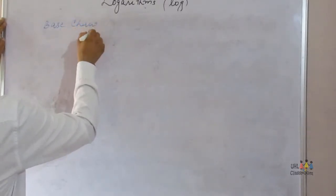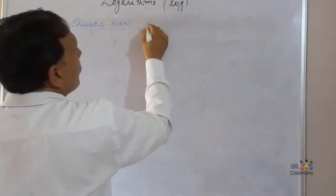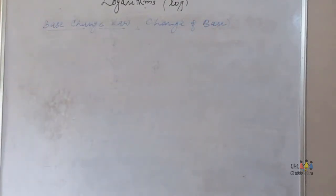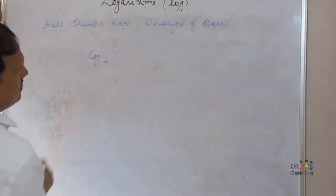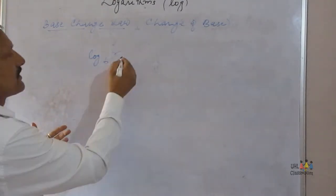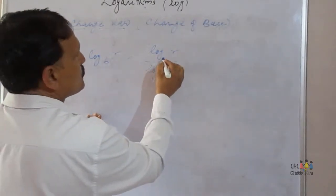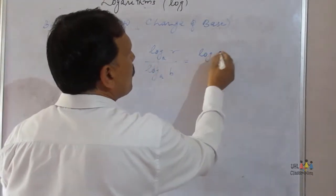Next we have the base change law. The base change law states that log of r to the base b is equal to log of r divided by log of b, where both logarithms are taken to the same base a. So log of r to the base b equals log r to the base a divided by log b to the base a.